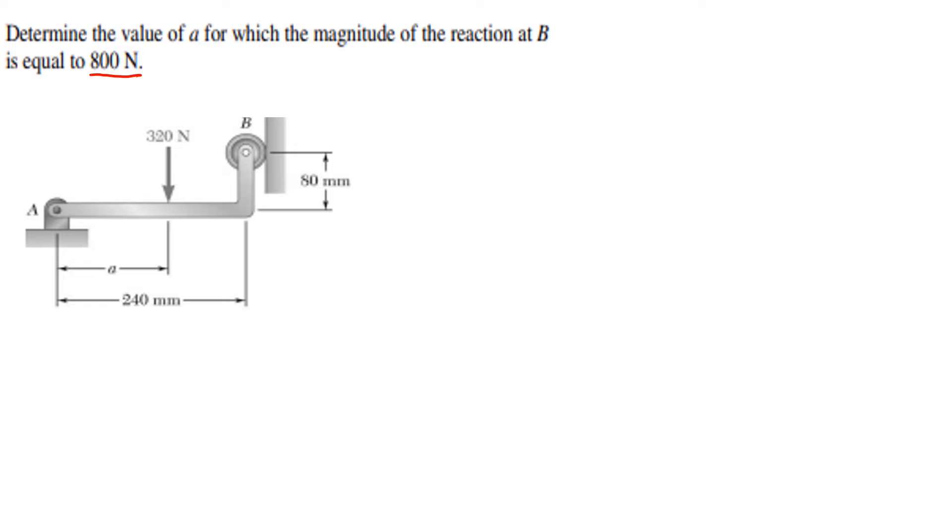We have a simple diagram with structures that is fixed by a pin at A and we have a roller at B. We also have a vertical force over there. So we want the distance A such that the system will be balanced or be kept in equilibrium. Let's first get the free body diagram from this structure.